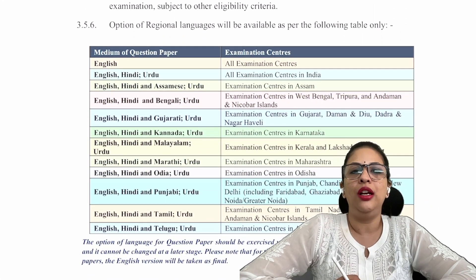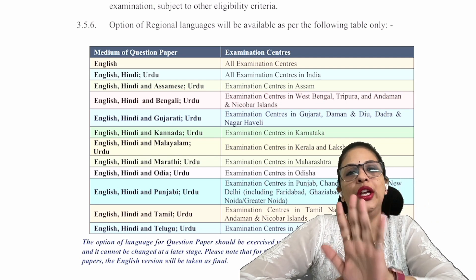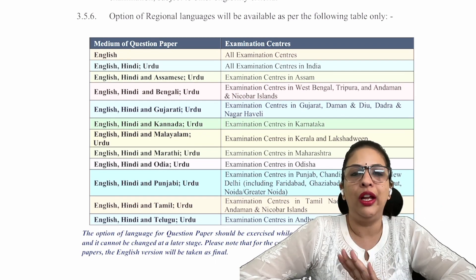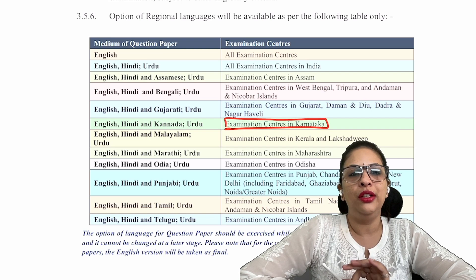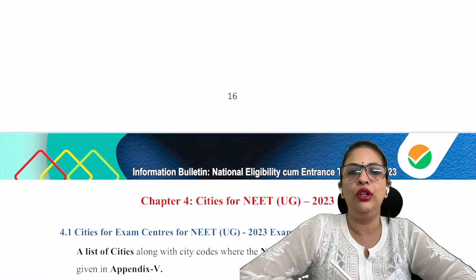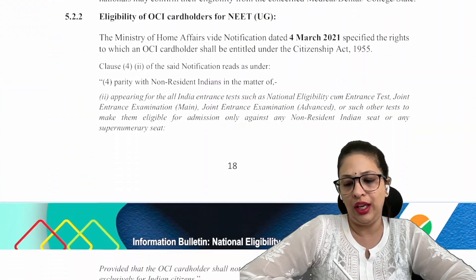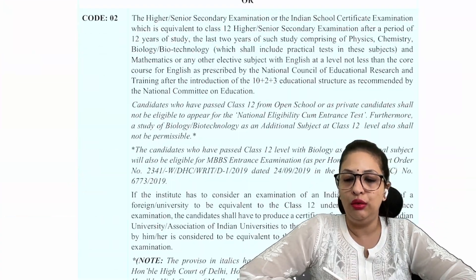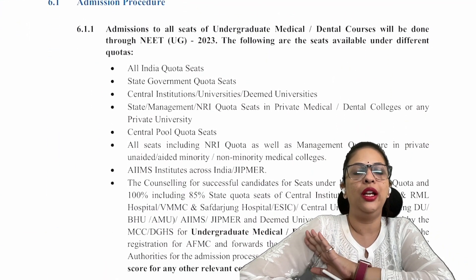One more thing to note is that certain languages like Urdu, Bengali, and Gujarati — your examination centers are related to your regional language choice. So if you have a paper in Kannada, your examination center will be in Karnataka. If you have a paper in Marathi, your examination centers will be in Maharashtra. So you have to choose your language medium carefully in accordance with your city. There is a list of cities with codes which we will look at separately — I will make a video about it very quickly so there is no confusion.